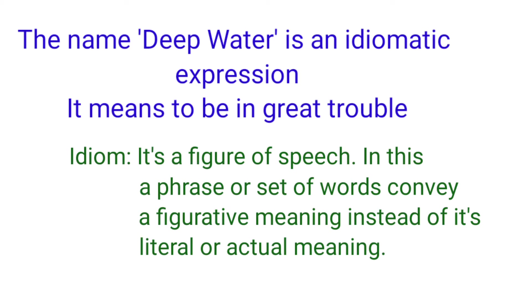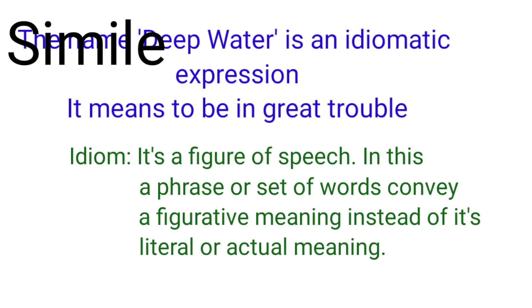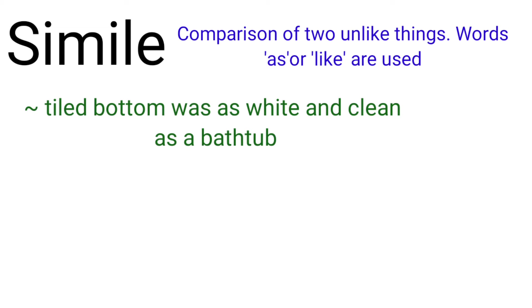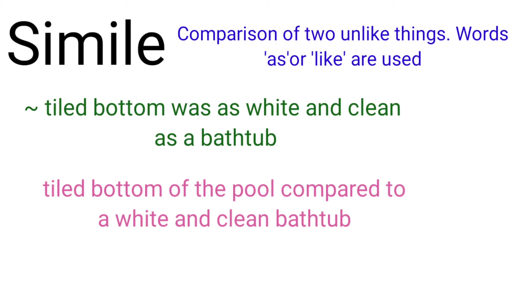The first figure of speech is simile. Simile is a comparison of two unlike things; the words 'as' or 'like' are used. Let's look at the examples. The first is: 'the tiled bottom was as white and clean as a bathtub.' The writer is comparing the tiled bottom of the swimming pool to a clean and white bathtub.